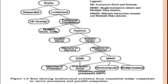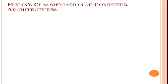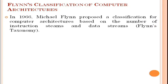Later developments include pipelined instruction execution, pipelined architecture computations, and memory access operations. Pipelining has proven especially attractive in performing identical operations repeatedly over vector data strings. Vector operations were originally carried out implicitly by software-controlled looping using scalar pipeline processors.